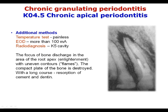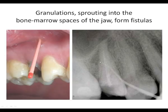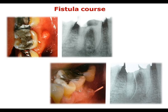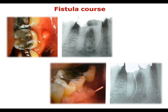With a long course, there may be resorption of cement and even dentin. Granulation tissue may sprout into bone marrow spaces of the jaw, forming fistulas in the gum, oral cavity, or skin. On X-ray, fistulas can be seen. A coarse fistula can be traced using a gutta-percha point, which helps identify the exact direction and location of the fistula tract.